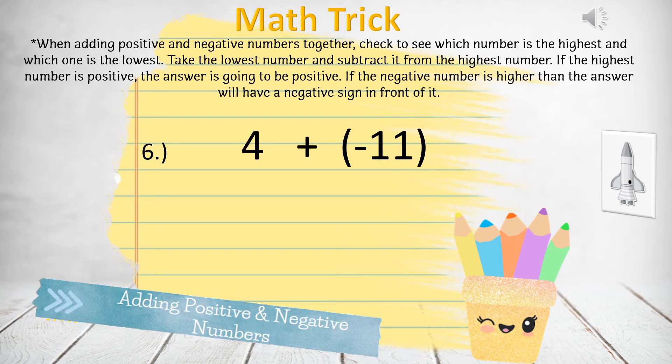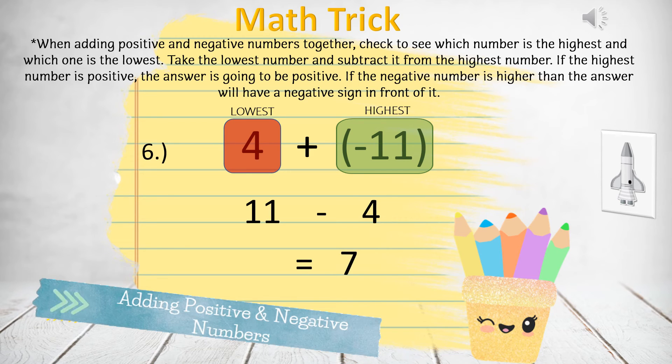Question 6: 4 plus negative 11. The highest number is 11, the lowest number is 4. 11 minus 4 equals 7. The highest number is negative, so the answer is negative. Negative 7.